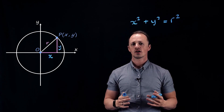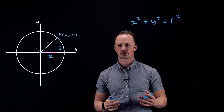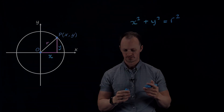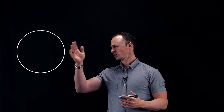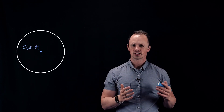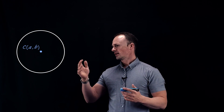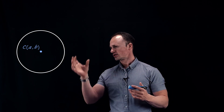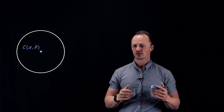Now that we know that, we can think about what happens if the centre of our circle is not at the origin. Let's consider a circle where the centre has coordinates a, b, and see if we can do the same thing as before and derive an equation for this.